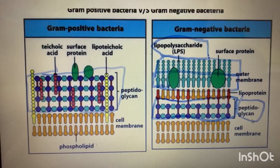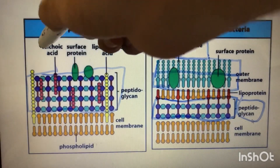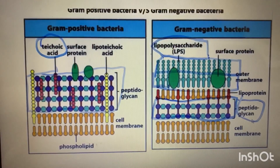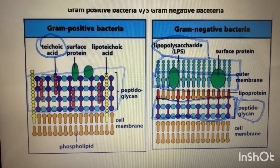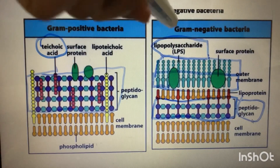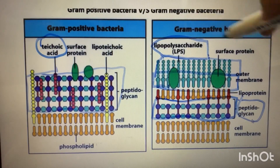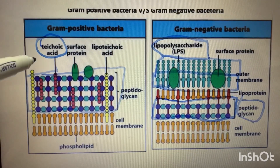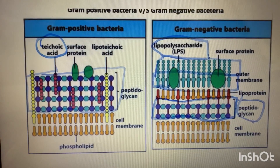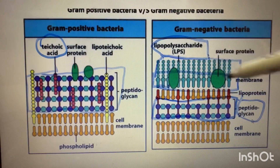Gram-positive bacteria, due to having a thick peptidoglycan layer, retains the purple stain. Gram-positive bacteria contains teichoic acid, while teichoic acid is not present in gram-negative bacteria. Gram-negative bacteria contains lipopolysaccharide (LPS) and endotoxin, which are not present in gram-positive bacteria.